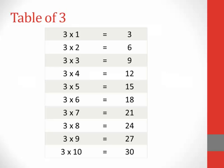Table of 3. 3 1s are 3, 3 2s are 6, 3 3s are 9, 3 4s are 12, 3 5s are 15, 3 6s are 18, 3 7s are 21, 3 8s are 24, 3 9s are 27, 3 10s are 30.